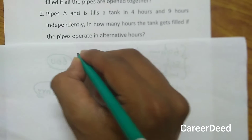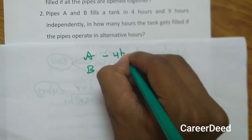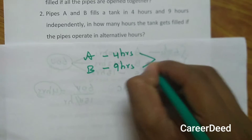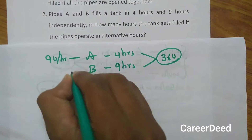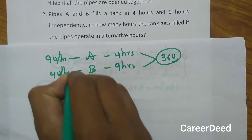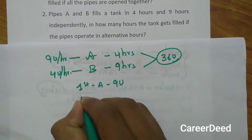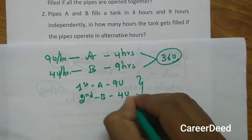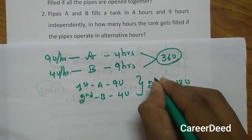We have two pipes: pipe A and pipe B. Pipe A fills the tank in 4 hours and pipe B fills it in 9 hours. Since we don't know the total capacity, we assume the LCM of 4 and 9, which is 36 units. Pipe A fills 9 units per hour and pipe B fills 4 units per hour. So in the first hour A fills 9 units, and in the second hour B fills 4 units — giving a total of 13 units filled in 2 hours.